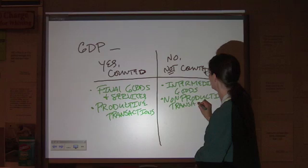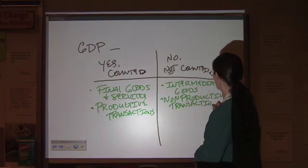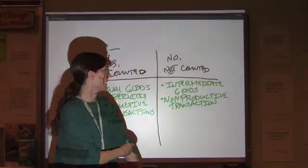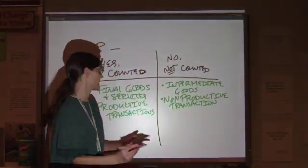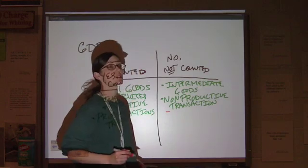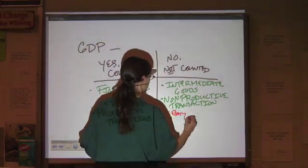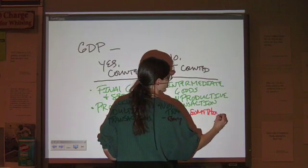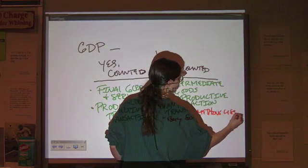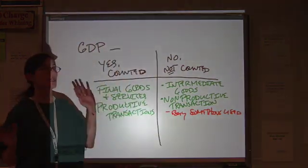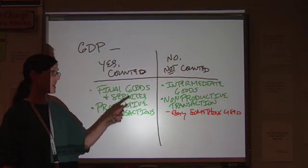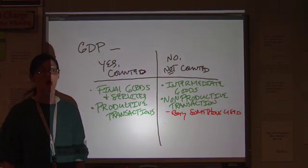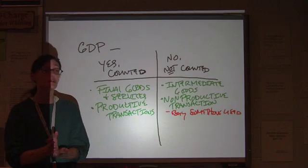I once spent an hour on the phone with an insurance company having a non-productive transaction. What are some non-productive transactions? If you buy or sell something used. You buy a house that was built in 1920. That counted in the GDP for 1920. It doesn't count the GDP for this year.